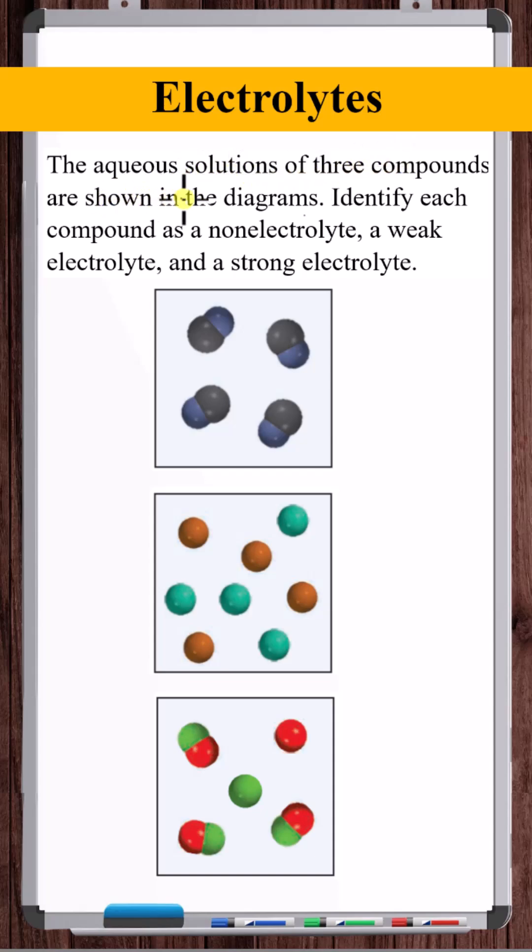The aqueous solutions of three compounds are shown in the diagrams. Identify each compound as a non-electrolyte, weak electrolyte, or strong electrolyte.